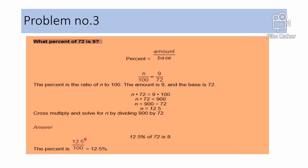To express this as a percentage: 12.5 divided by 100, and the answer is 12.5%. So the answer is 12.5% of 72 is 9.